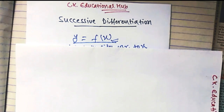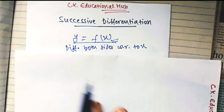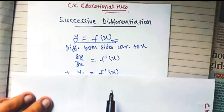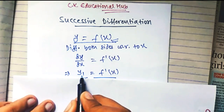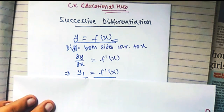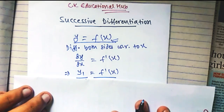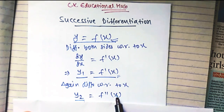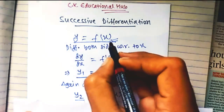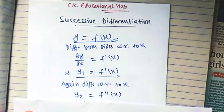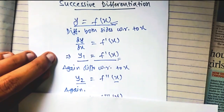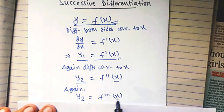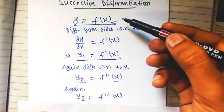Now differentiate y equals f(x) with respect to x. Then dy/dx equals f'(x), and we write this as y1, which equals f'(x). Here y1 represents that the given function is differentiated the first time. Further differentiating gives y2 equals f''(x), meaning the function is differentiated twice. Differentiating again gives y3 equals f'''(x), representing differentiation a third time.